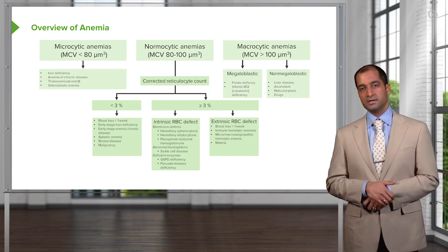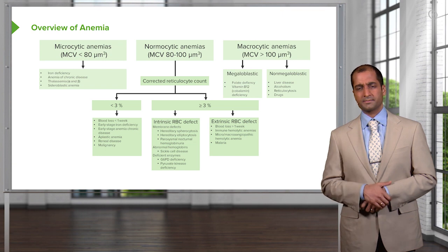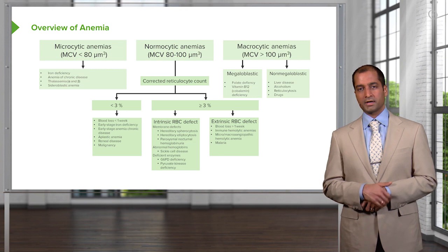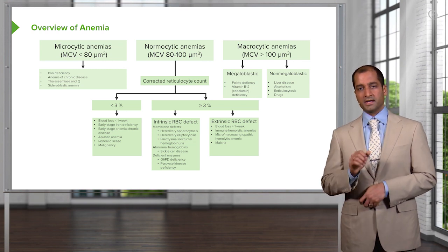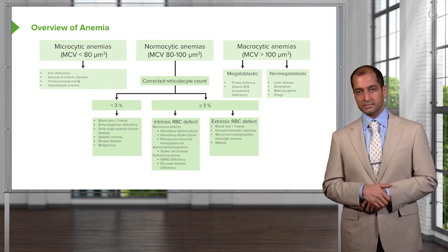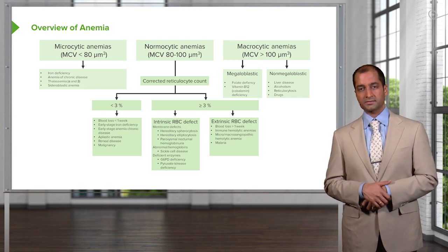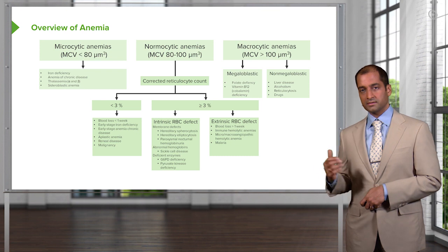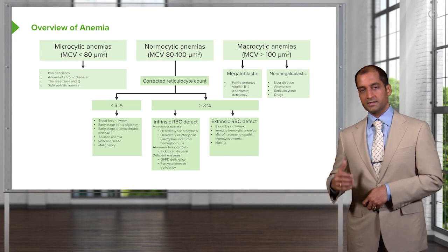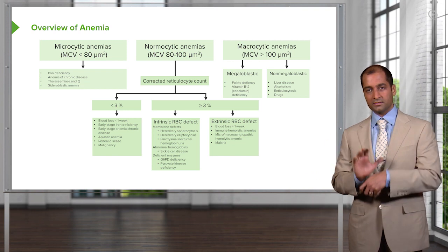Whereas if the RBCs are being destroyed en masse by the spleen or intravascularly, the bone marrow has to go into overdrive — churning out reticulocytes. So you'd expect there to be an increase in reticulocytes — an actual value greater than 3% — and that will be the case for any hemolytic anemia.